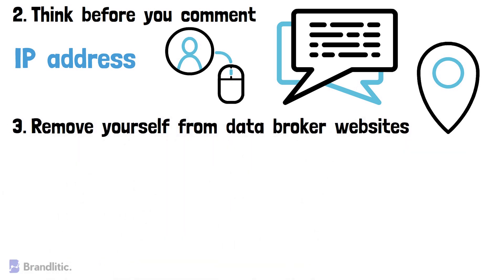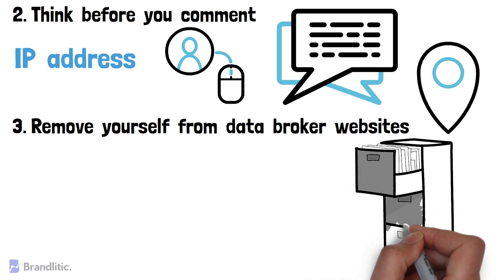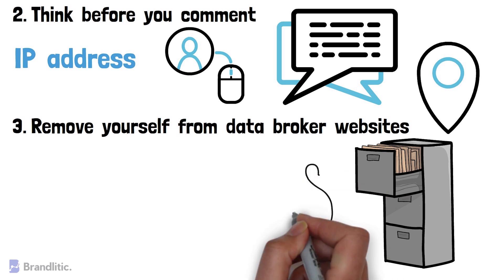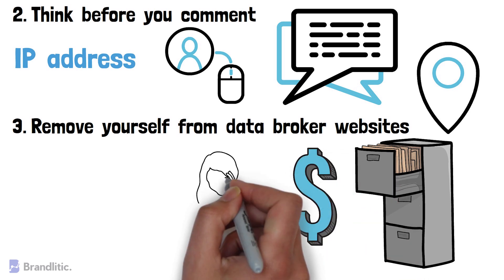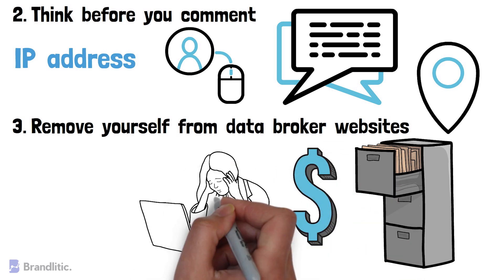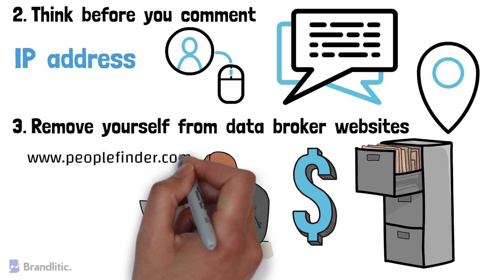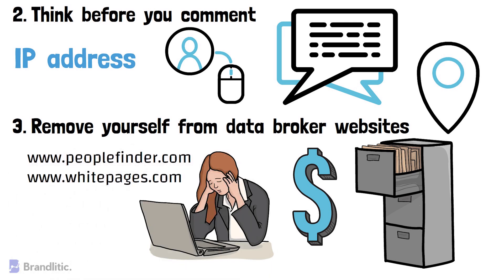3. Remove yourself from data broker websites. These are websites that scrape the internet, gather your data in one place, and sell it to businesses. You can opt out from their website, but because they make money from your data, they can make the process lengthy and frustrating. If you're not sure whether your data is on any such website, you can check www.peoplefinder.com or www.whitepages.com.